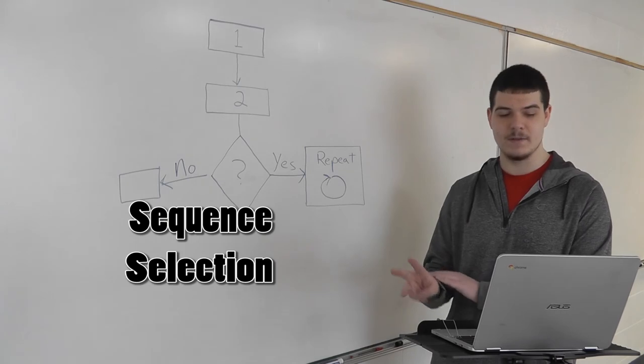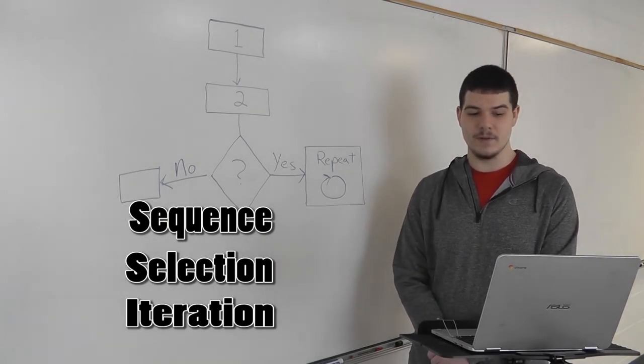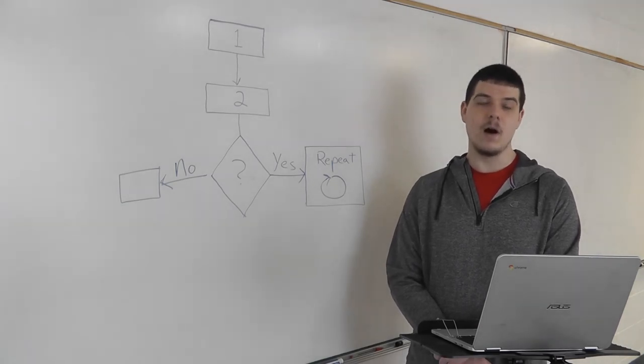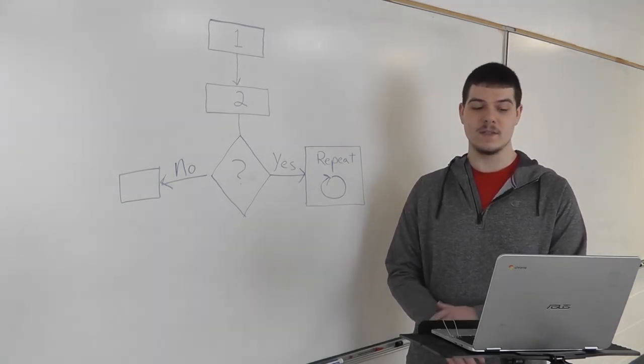Sequence, selection, iteration. Those are the three building blocks of code. No matter how complex the software or how many lines of code in the program, all algorithms are built on these three characteristics.